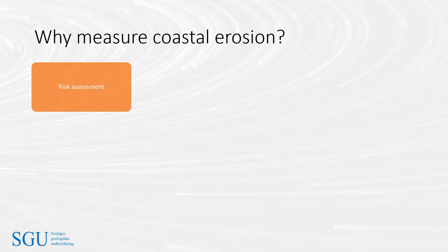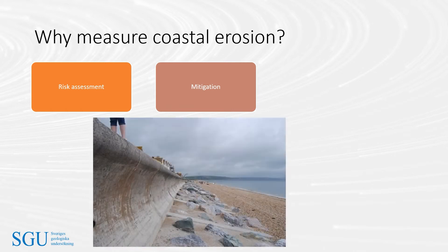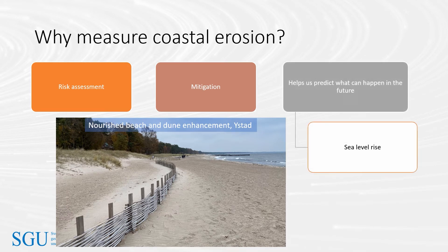Why measure coastal erosion? We measure it because it is an essential part of coastal risk assessment for society. By knowing how much erosion is occurring, where it is occurring and why, we can develop appropriate mitigation measures. Note that the interpretation of appropriate has changed over time — from building hard structures such as vertical concrete walls, to implementing softer engineering and nature-based solutions such as beach nourishment. The interpretation also depends on local factors; a hard defence might still be unavoidable where buildings and critical infrastructure are located at an eroding coastline. Measuring coastal erosion also provides important background information to help understand how the coast might respond to future sea level rise.